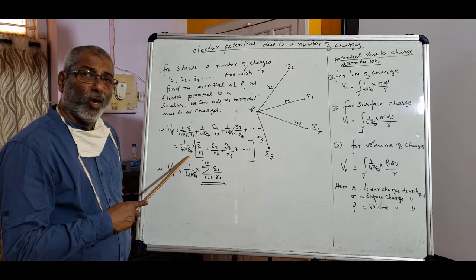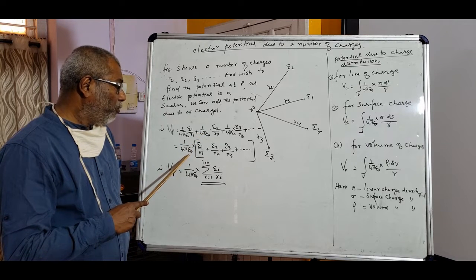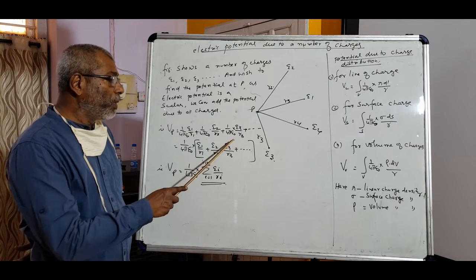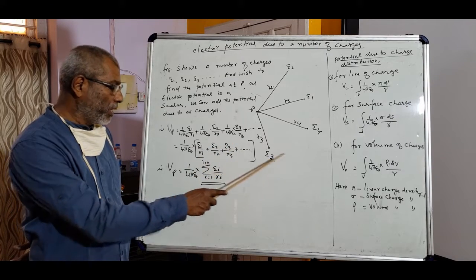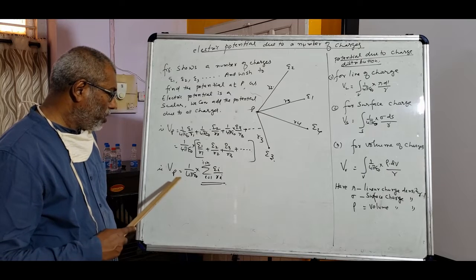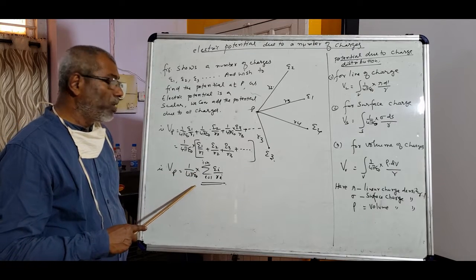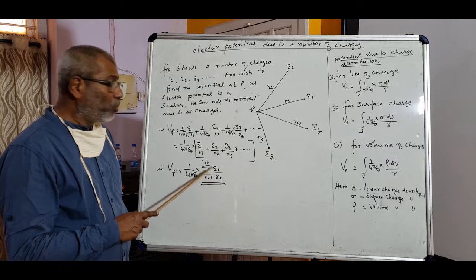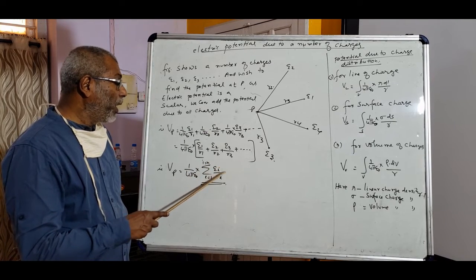Taking 1 by 4 pi epsilon 0 as common, we get 1 by 4 pi epsilon 0 with q1 by r1 plus q2 by r2 plus q3 by r3 plus etc. In summation notation we can write Vp is equal to 1 by 4 pi epsilon 0, sigma i is equal to 1 to i is equal to n, qi by ri.